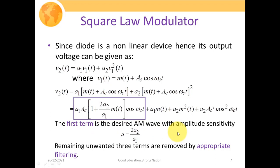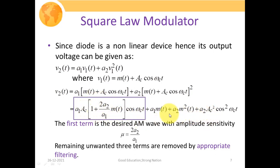The first term is the desired AM waveform with amplitude sensitivity given as 2A2/A1. The remaining three unwanted terms — A1·M(T), A2·M²(T), and A2·AC²·cos²(omega-C·T) — are removed by appropriate bandpass filtering, as they correspond to undesired frequency components. After proper filtering, we are left with only the AM signal. This is how, with the help of the square law modulator, we are able to generate our AM signal.